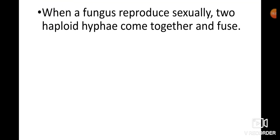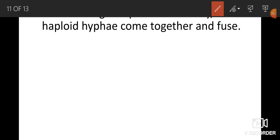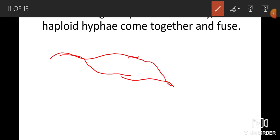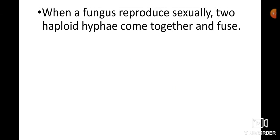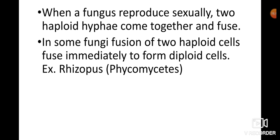When fungi reproduce sexually, two haploid hyphae come together and fuse. In some fungi, fusion of two haploid cells leads immediately to formation of diploid cells — for example, Rhizopus, which belongs to class Phycomycetes.